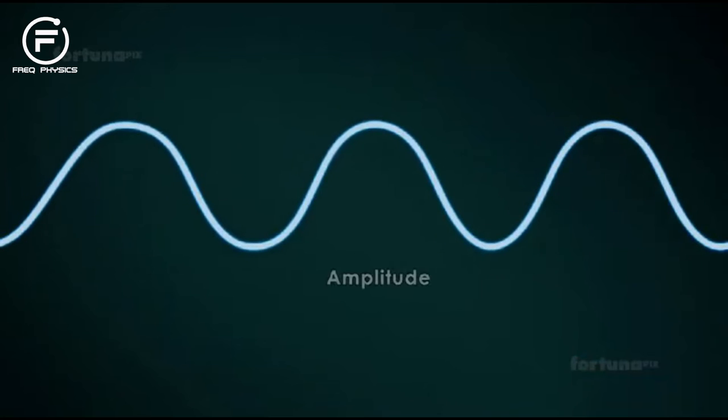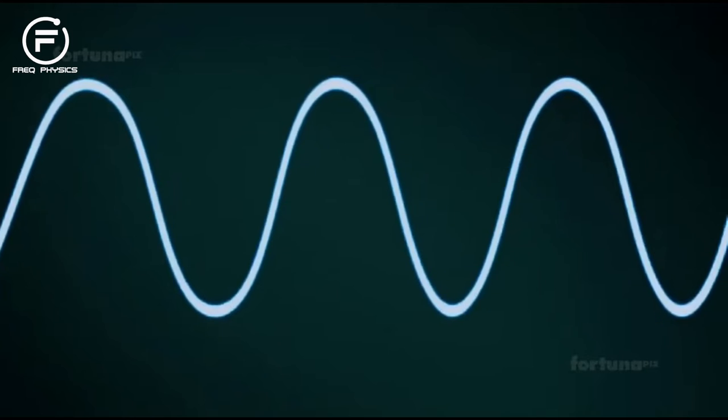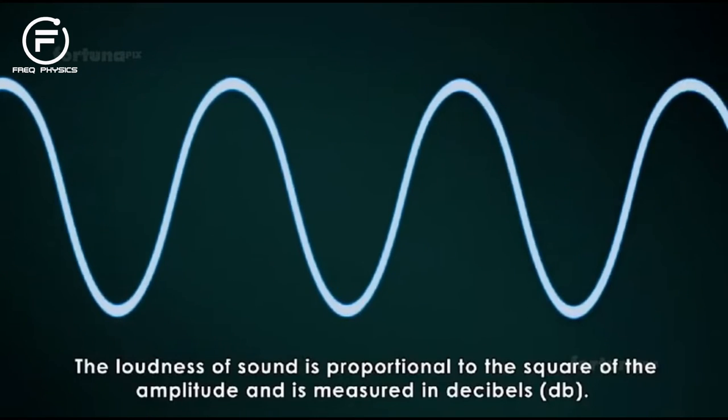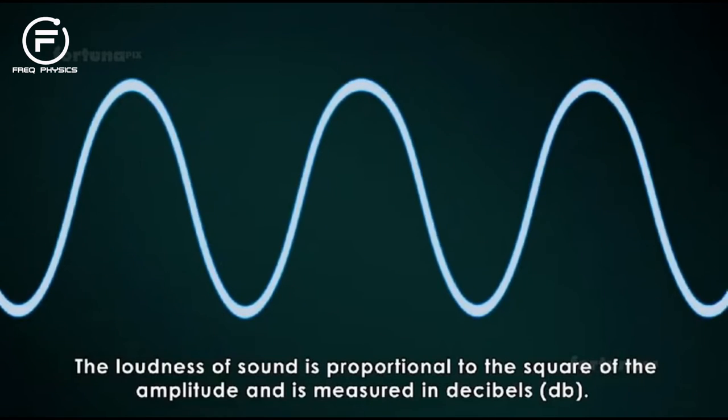A sound wave's amplitude is the height between the topmost part of the wave (the peak) and the bottommost part of the wave (the trough). When the amplitude is high, the sound will be louder. The loudness of sound is proportional to the square of the amplitude and is measured in decibels (dB).